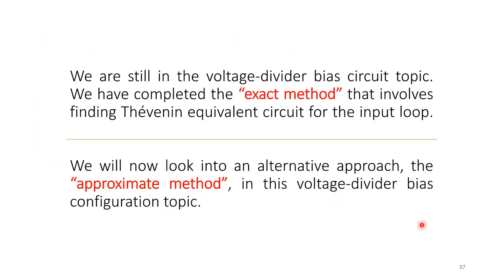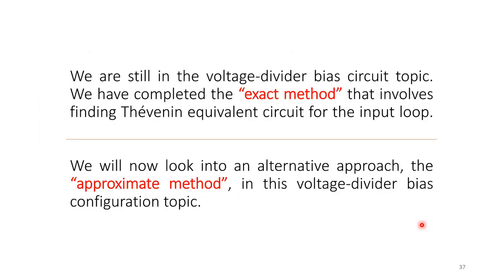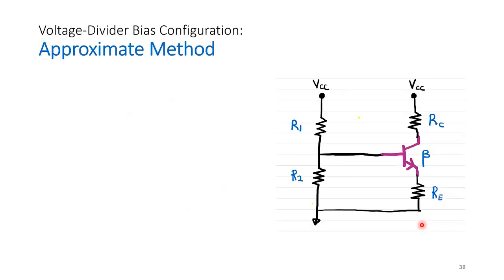We have completed the exact method involving the Thevenin equivalent circuit for the input loop. We now look at an alternative approach: the approximate method for analyzing the voltage divider bias configuration. It is the same bias circuit, so the improvement in beta stability is identical — the approximate method is simply a different analytical approach to make analysis easier.